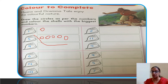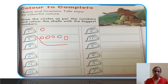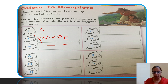Again I repeat: students, you have to draw circles for every shell. For every shell, draw circles. But on this page, only the shell with the biggest number in each line gets colored. And on the last page, in both lines, the shell with the smallest number gets colored. Okay! Complete this page, then click the picture and send it to me. That's all for today — bye bye students, enjoy your day!